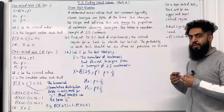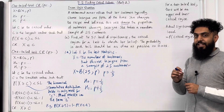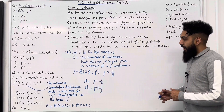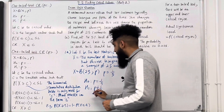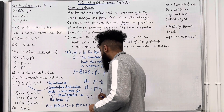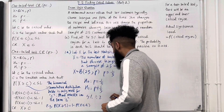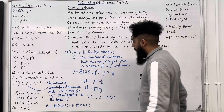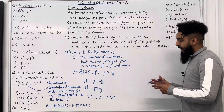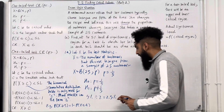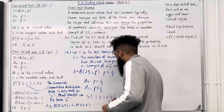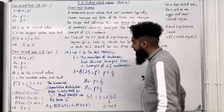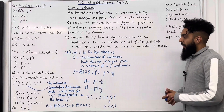For a two-tail test we take the significance level and divide it by 2. We have a 5% significance level, divide by 2, giving us 2.5%, which is equivalent to 0.025.